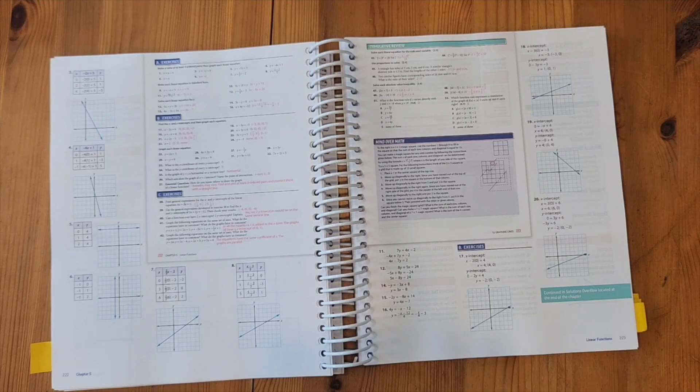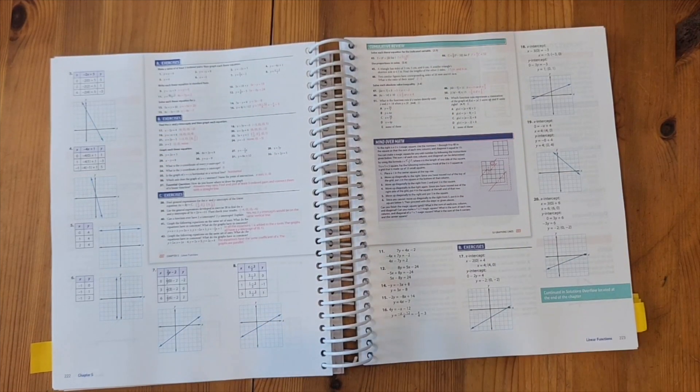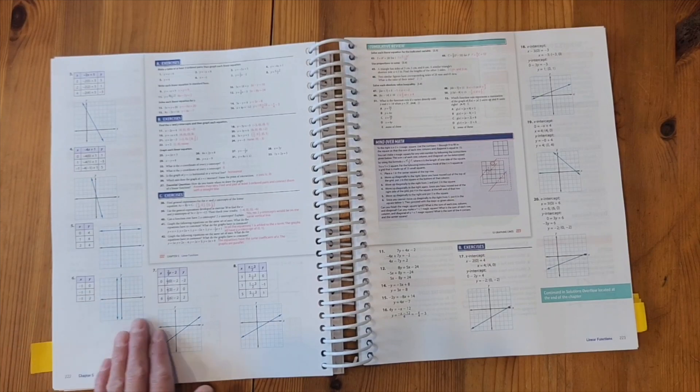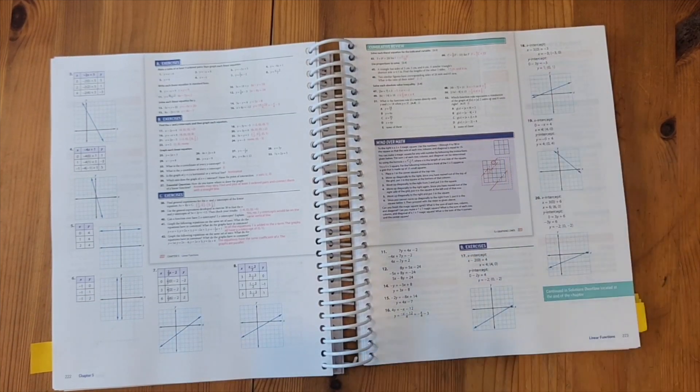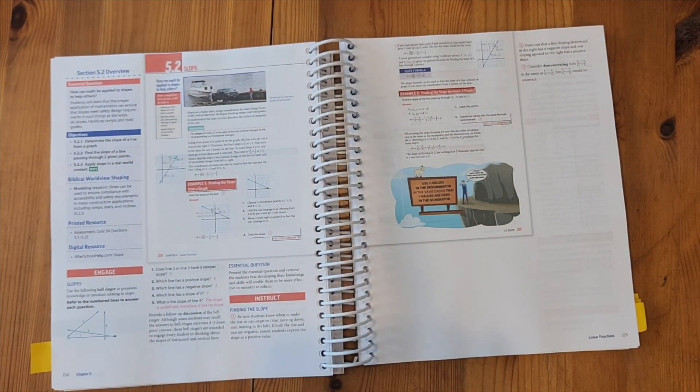This would be what an assignment would look like. And you would assign the problems from these pages from your student textbook. And then you have all of the answers written out for you. And you also have the solutions worked out for you in the margins. And it does have a note that says continued and solutions overflow located at the end of the chapter if the answers did not all fit in the margins for these pages. And then that would begin the next lesson.